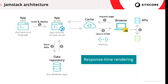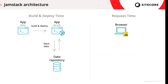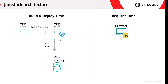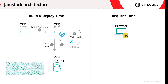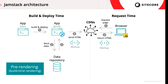What JAMstack architecture focuses on is separating application runtime from HTTP request processing. In this configuration, the server doesn't wait for a request to come in to begin rendering the app and generating markup. Instead, it does all this ahead of time, typically triggered by code deployment. This process is called pre-rendering. It enables generated markup to be stored in static files, which are deployed to content delivery networks. The CDNs, in turn, take over the responsibility of responding to HTTP requests, which they can do much faster.